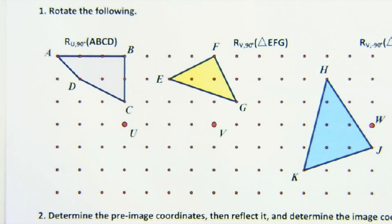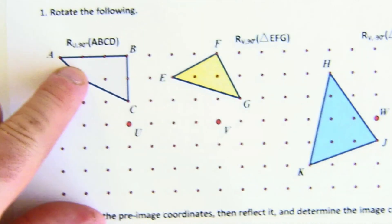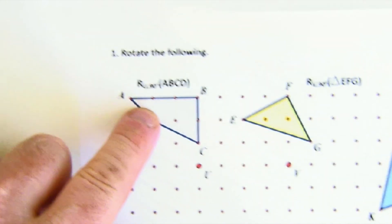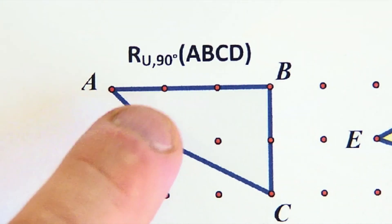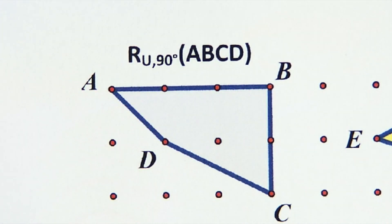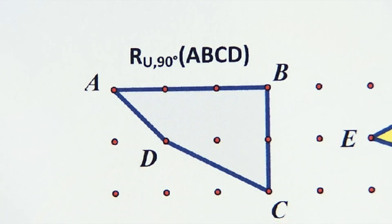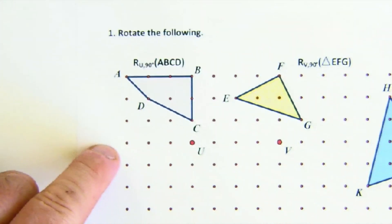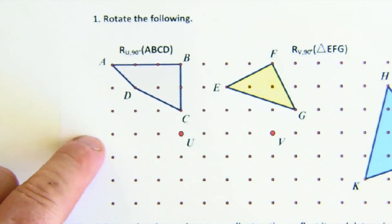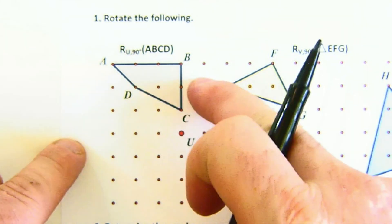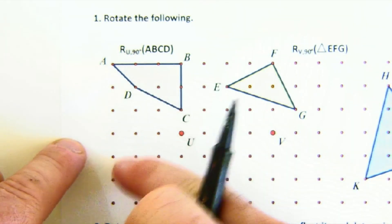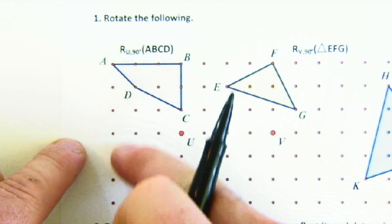First, let's look at the notation. This is a rotation about point U, 90 degrees. Remember we talked about rotational order — rotational order of 90 means counterclockwise, so it's going to go in this direction.